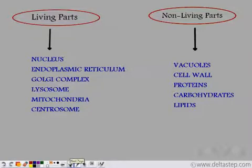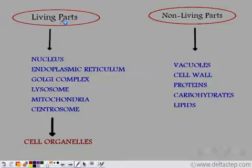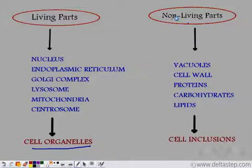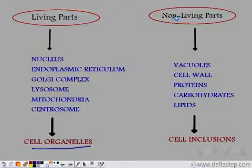The living component of the cell consists of all the cellular organelles like the nucleus, the endoplasmic reticulum, and the Golgi complex. The non-living parts of the cell consist of the vacuoles, the cell walls, and the constituents that make up all the cellular organelles. These are known as cell inclusions — they do not take part in any decision making, so they are the non-living part of the cell.